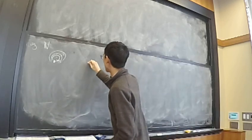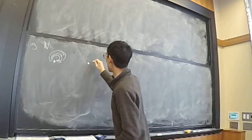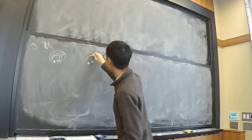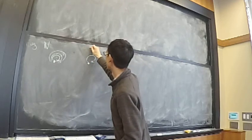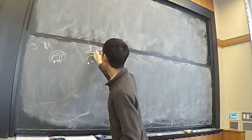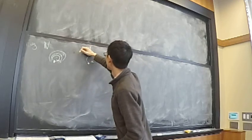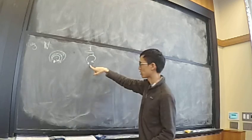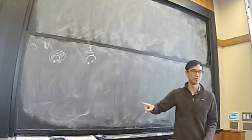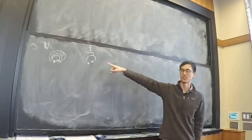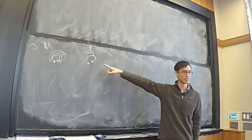In general, the real numbers form a category with one object, or any group forms a category with one object. There's also the trivial category, which we call one — it has one object and one morphism, which is just the identity morphism. Composing one with one gives one again.